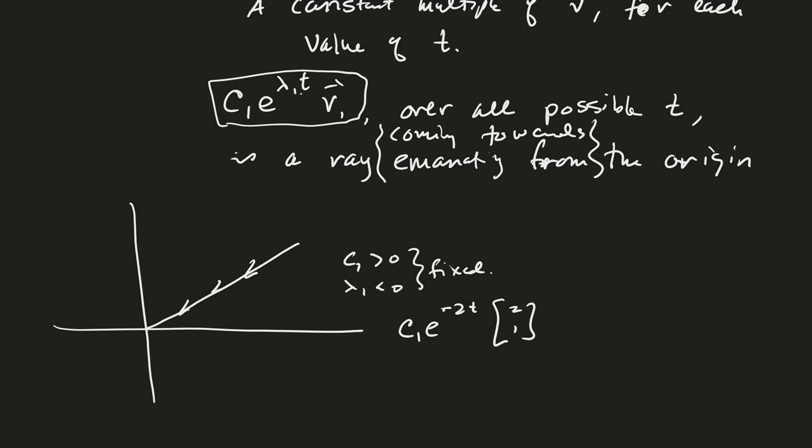So C1 e to the, so for example, minus 2T times, let's just say 2, 1. If I change the T now, you can see that this is moving towards the origin. And then if I had made it like C1 e to the positive 2T times 2, 1, what would that be? That would be the same line, but it would be going in the opposite direction, right? It would be going away from the origin.